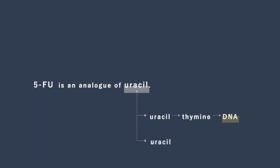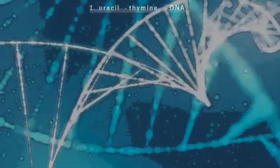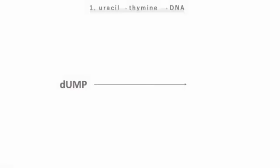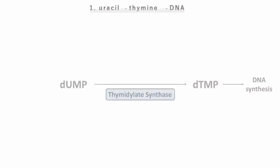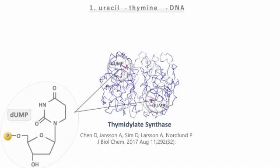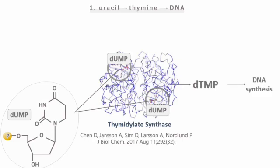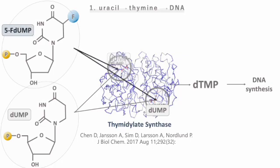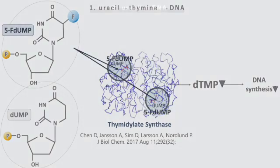Uracil is one of the bases that make up the structure of RNA. First, uracil serves as a precursor to thymine, a fundamental component of DNA. The enzyme responsible for this reaction is thymidylate synthase. dUMP binds to thymidylate synthase, leading to dTMP synthesis. The metabolite of 5-FU binds to thymidylate synthase instead of dUMP, resulting in the inhibition of dTMP synthesis. Second,